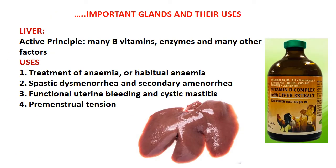The liver is the largest gland in every animal. Its main active principles include many B vitamins especially B12 and B6, many enzymes, and other factors involved in physiology including cholesterol and hormone synthesis. A liver extract is prepared and used for treatment of anemia, spastic dysmenorrhea, secondary amenorrhea, functional uterine bleeding, cystic mastitis, and premenstrual tension.